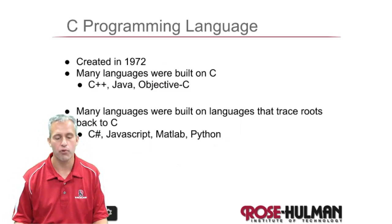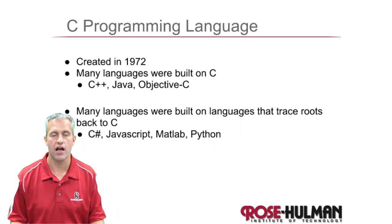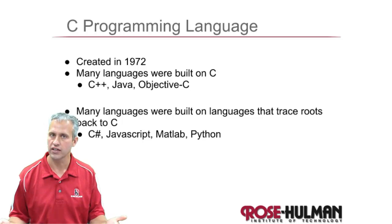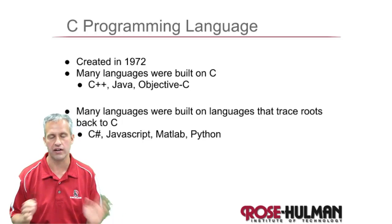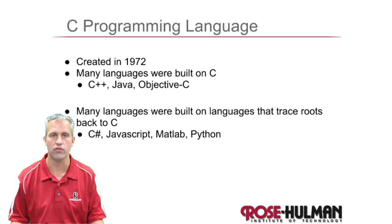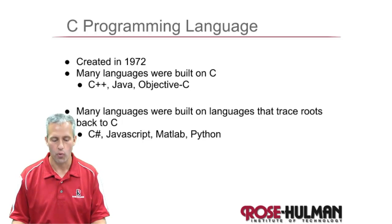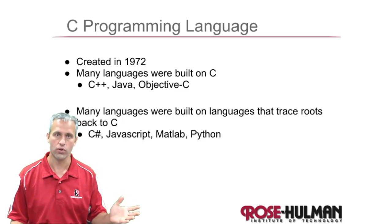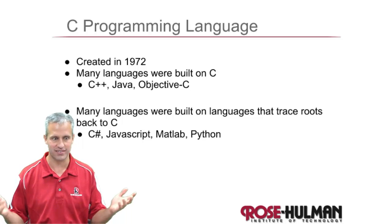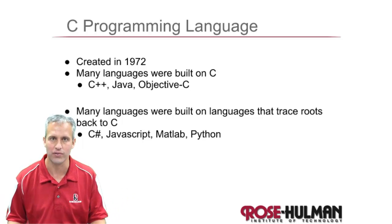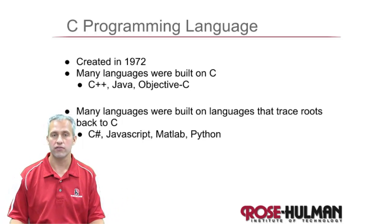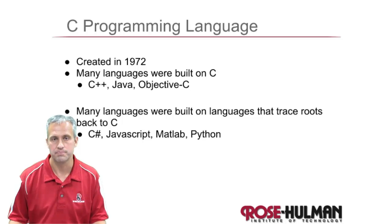So the C programming language — first a little history. It was actually created in like '72. It's hard to say exactly when a language is created; they kind of evolve a little bit. But the point is that it's old. So I mean, 72 — that's way older than me. So it's been around for a long time.